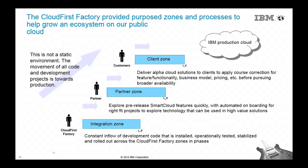We had a constant inflow of projects coming into the integration zone. We would test it, install it, and make sure it works. When applications were good enough, they would move to the partner zone, where we would invite partners to work and experiment with them. Eventually those applications would make it into the client zone — literally graduating those applications into possibly going into production or the IBM Smart Cloud Enterprise.